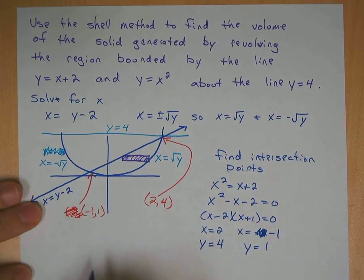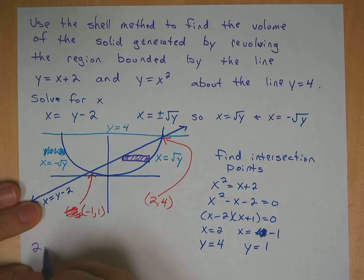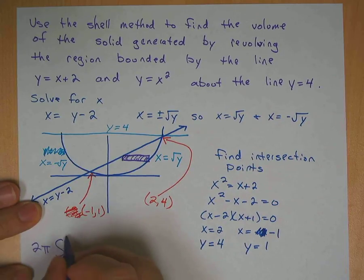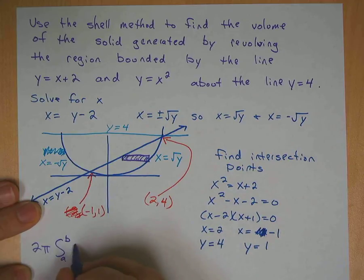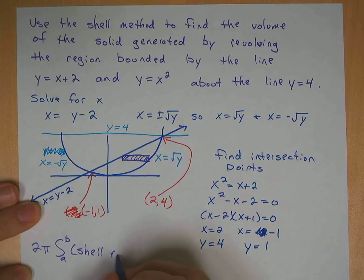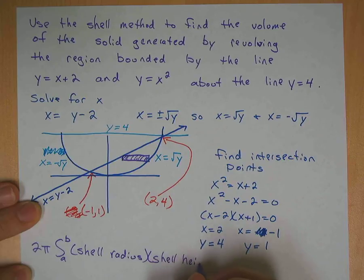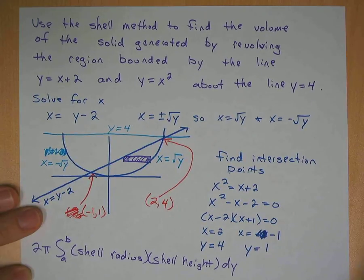This is our shell. And your shell method is this formula, 2 pi from whatever A to B is, whatever your limits are, of your shell radius times your shell height. And in this case, it's dy because we're revolving around a line y equals 4.